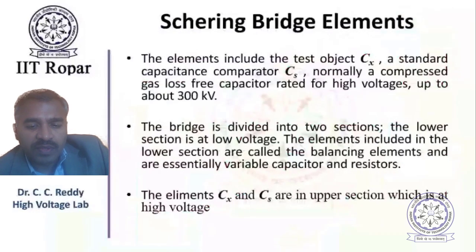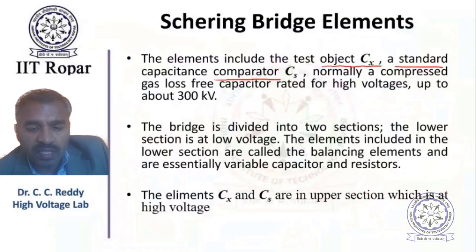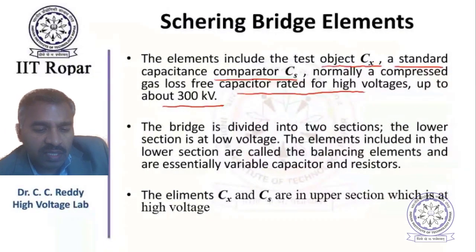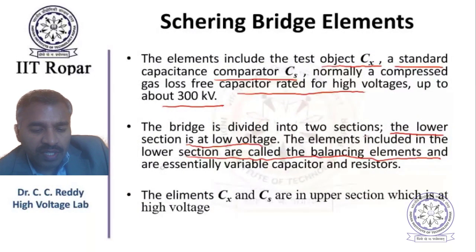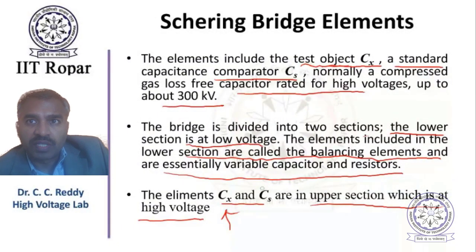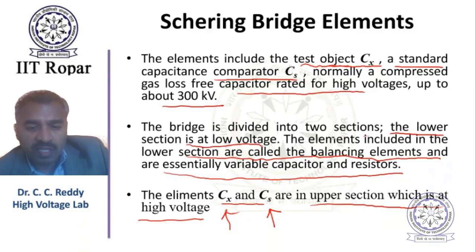The elements include the test object Cx and a standard capacitor Cs. Normally a compressed gas, loss-free capacitor rated for high voltages up to around 300 kV is used as Cs. The bridge is divided into two sections: the lower section at low voltage contains the balancing elements, which are essentially variable capacitors and resistors. The elements Cx and Cs are in the upper high voltage section.